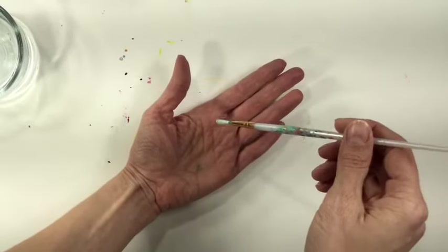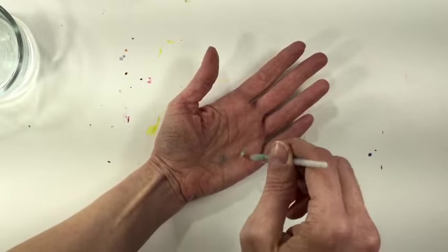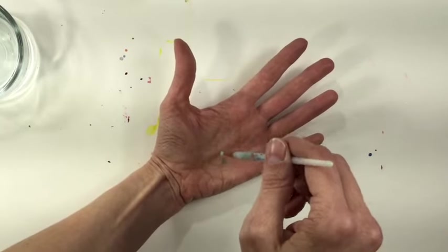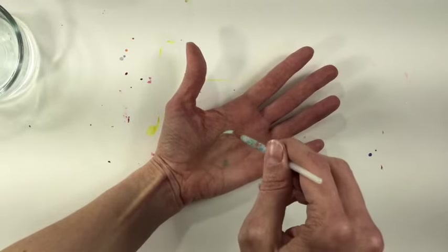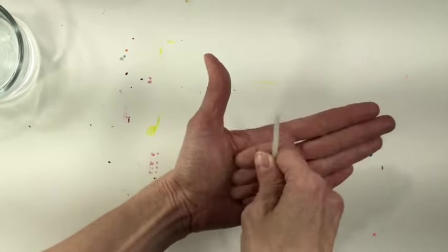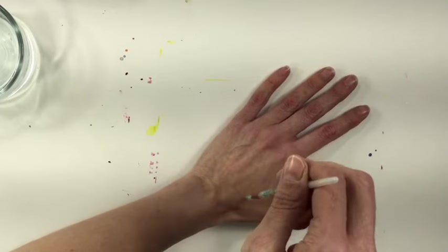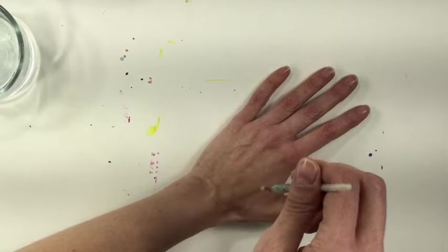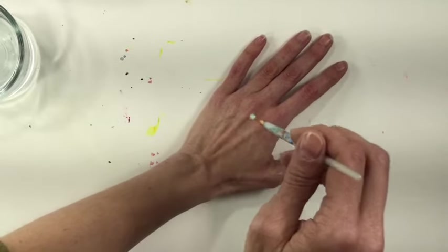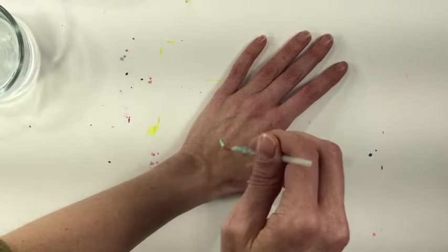You'll want to be pressing very lightly. So before you start painting, I want you to try painting an invisible spiral in the palm of your hand. Press very lightly and if you do it correctly, it should actually tickle your hand. That means that you are pressing very lightly and you'll be able to paint a beautiful skinny line.